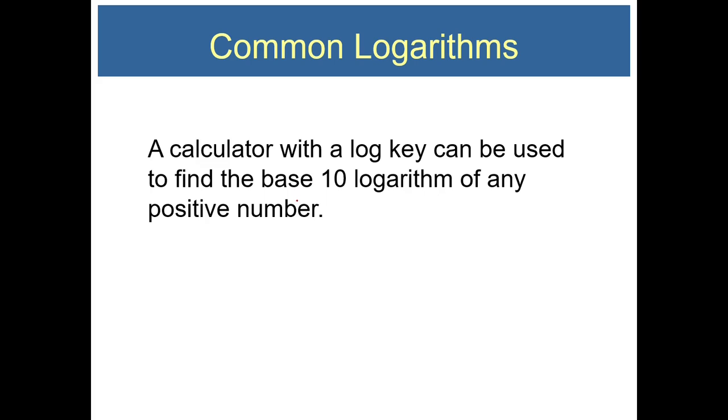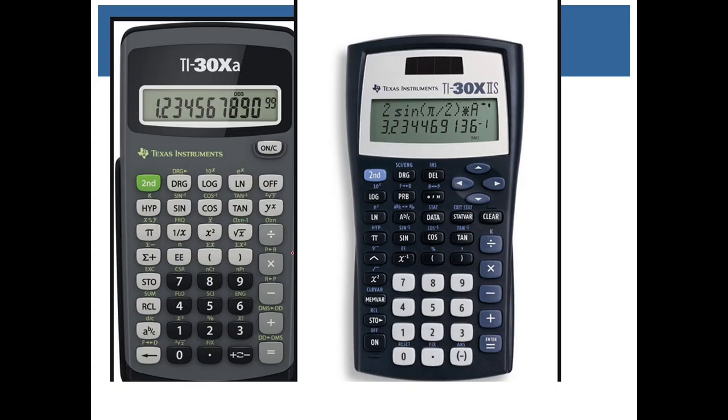A calculator with a log key can be used to find the base 10 logarithm of any positive number. Here are two types of common calculators that students use. The log button is located here, and it is right in the middle on the top row of this calculator. On the other calculator, the log is located underneath the second button. In general, the log button is located near the ln button, so look for that button and you'll be able to find the log button as well.